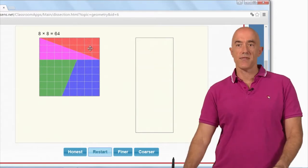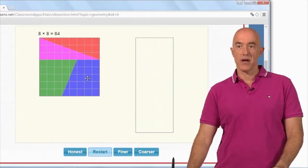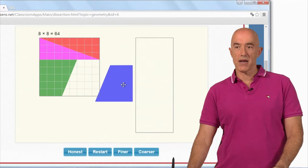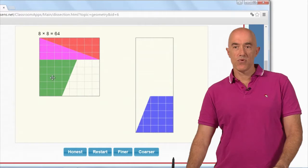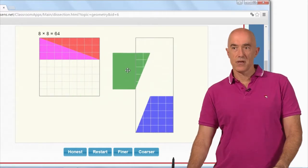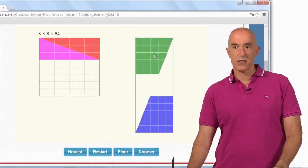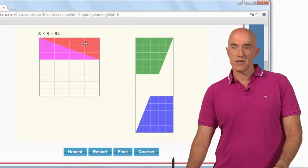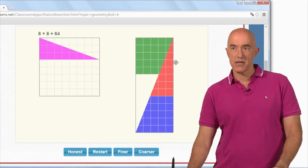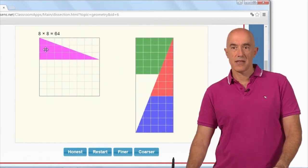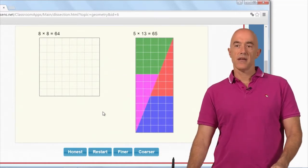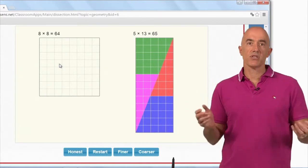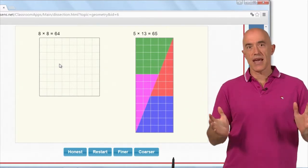So we have this eight by eight square and we move this bottom piece into this rectangle down here. We move this trapezoid into this rectangle on the top. We take this triangle and we slip it in right here. And we take this triangle and we slip it in right here. So we've taken this square and rearranged it into a rectangle.